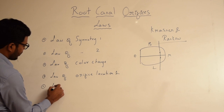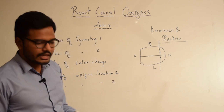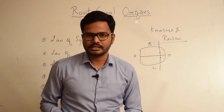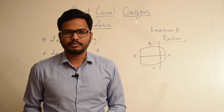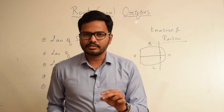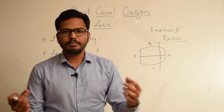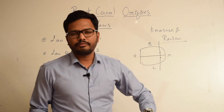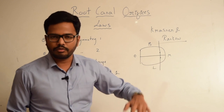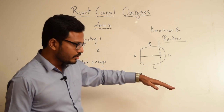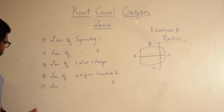According to Law of Orifice Location 2, within the same pulp chamber, these orifices are located at the angles of the junction of the wall and floor — that is, at the point angles. So in a pulp chamber, we have a buccal wall and a floor, and these orifices are located at the junction, present at the angles or corners.